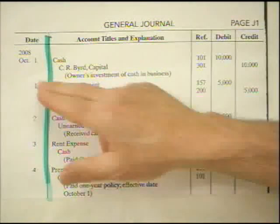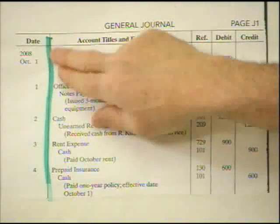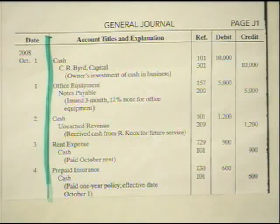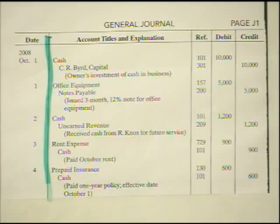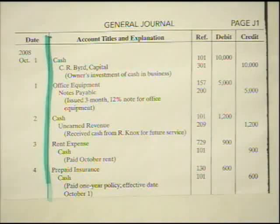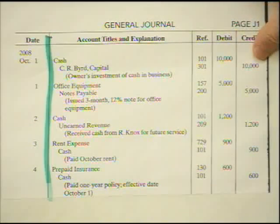For every transaction we always have a date, which goes in the date column. For our first transaction, the owner — C.R. Bird — is putting $10,000 into the company. That $10,000 is cash, and cash is an asset; to make an asset go up we debit it. So we debit cash. The owner putting money in is owner's equity, specifically capital, and owner's equity going up means we credit it because it's on the right side of the equation. That's where the debit and credit come from.